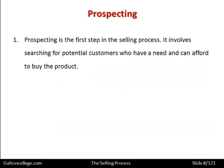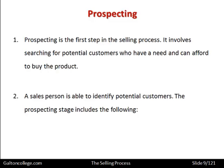Prospecting is the first step in the selling process. It involves searching for potential customers who have a need and can afford to buy the product. There are two types of criteria: first, we need to find customers who want and need the product; and second, that they can also afford it. A salesperson is able to identify potential customers from their behaviour, their demeanour, the way they dress, act, and talk — something the salesperson can pick up on which will indicate a potential sale.